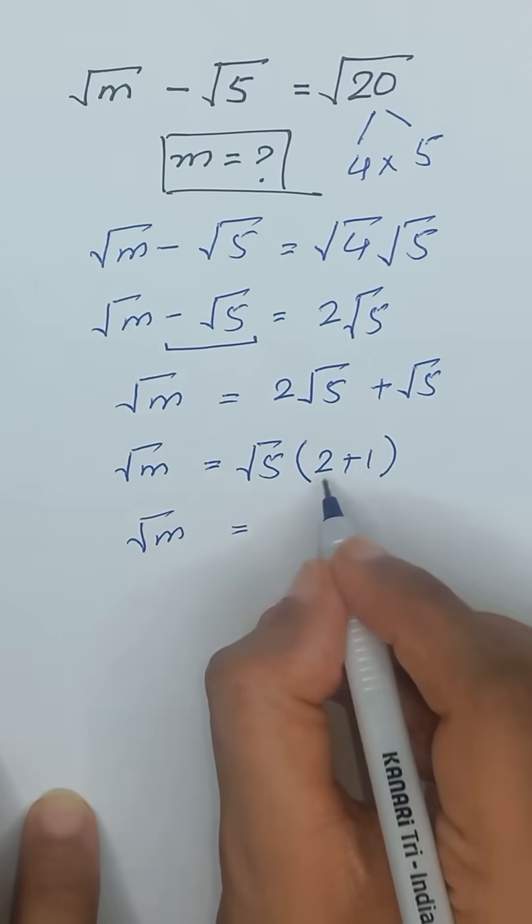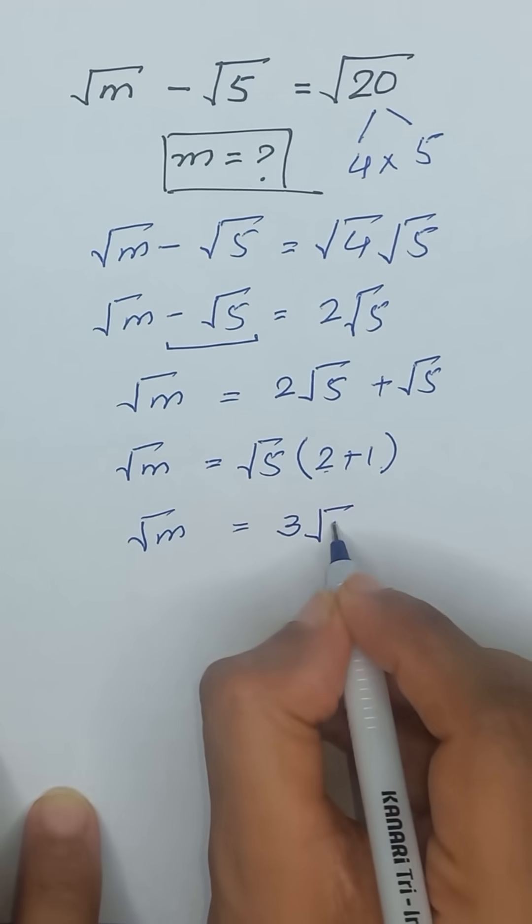Square root of m is equal to 2 plus 1 is 3, 3 times square root of 5.